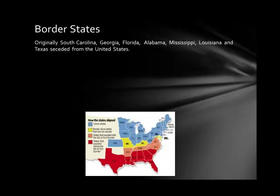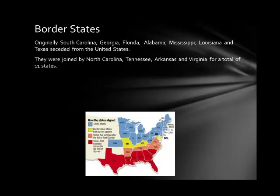Originally, South Carolina, Georgia, Florida, Alabama, Mississippi, Louisiana, and Texas seceded from the United States. They were joined by North Carolina, Tennessee, Arkansas, and Virginia, making a total of 11 states that seceded or left the United States to form their own country.